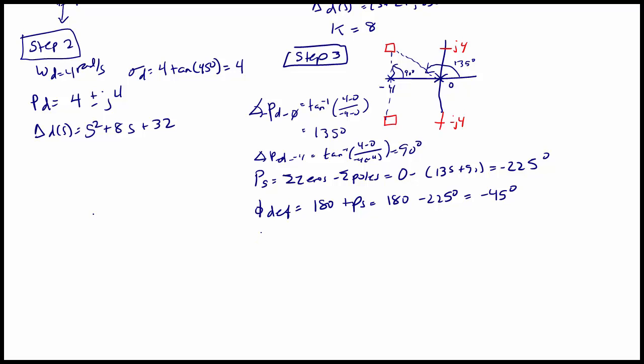So now what you want to do is to design the lead compensator to supply this 45 degrees. Now let's go on to step 4. The first thing we do in step 4 is we write the form GC of S is equal to S plus Z lead over S plus P lead.